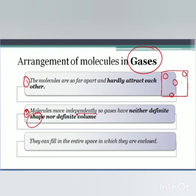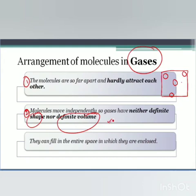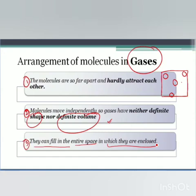The second point states that gases do not have a definite shape nor a definite volume. Why? You can observe that the molecules in gases are very very far apart and do not have any molecular forces of attraction, so they can move independently. Therefore, gases do not have a definite shape nor a definite volume. Since they do not have a definite volume, our third point is that they can fill the entire space in which they are enclosed — they can fill a complete container, a jar, or even a room is full of air. So gases do not have a fixed volume and they can take the shape of the entire container in which they are enclosed.